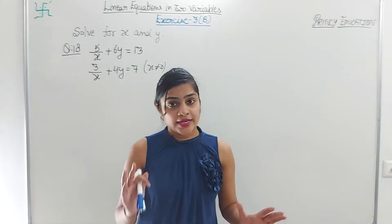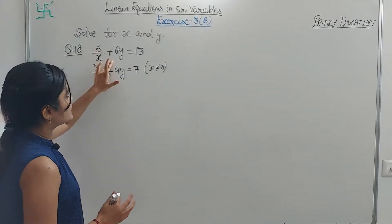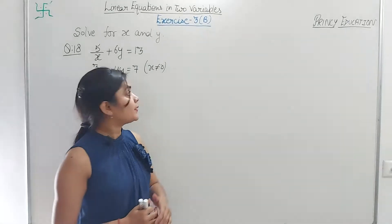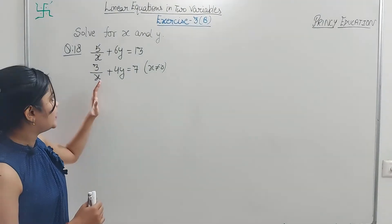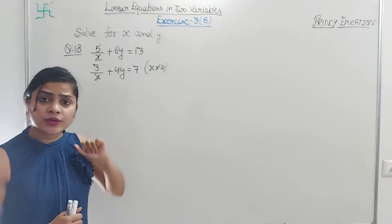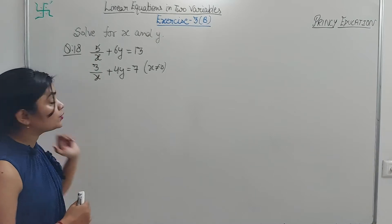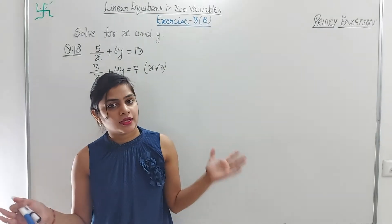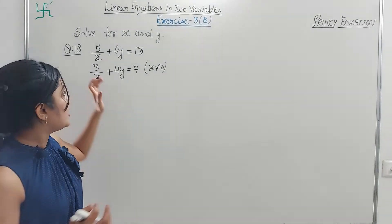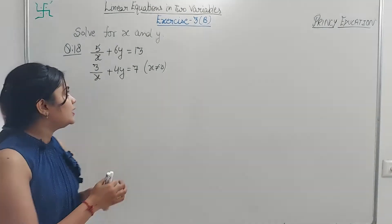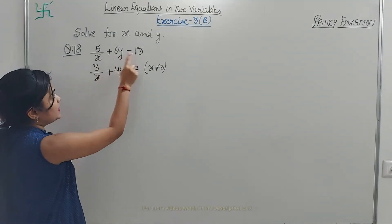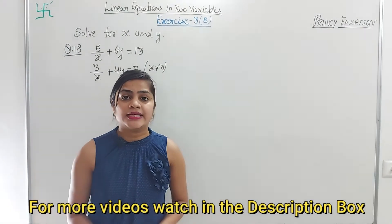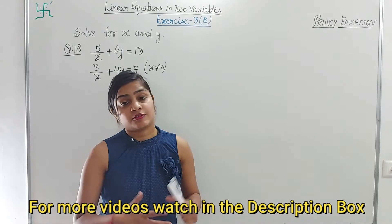Now question number 18. Equation 1: 5/x + 6y = 13. Equation 2: 3/x + 4y = 7. This equation has the variable in the denominator. Previously we took LCM for regular terms, but here taking LCM gives an xy term — making it a quadratic, a big problem. So we will use a short, easy method instead.